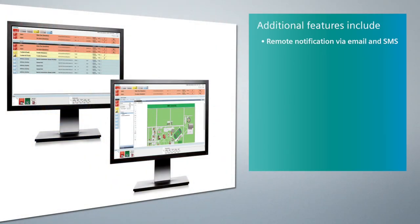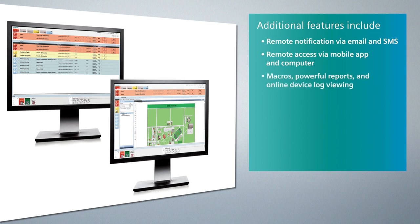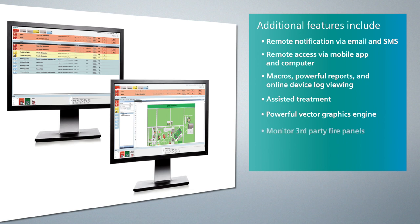Additional features included with both Cerberus DMS Compact and Cerberus DMS are remote notification via email and SMS, remote access via mobile app and computer, macros, powerful reports, and online device log viewing. Assisted treatment guides inexperienced operators through the treatment of an event. A powerful vector graphics engine provides visual representation and navigation of your site. You can also monitor third-party fire panels and share information with third-party systems via OPC.